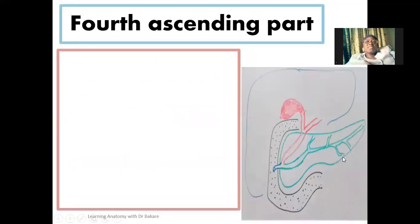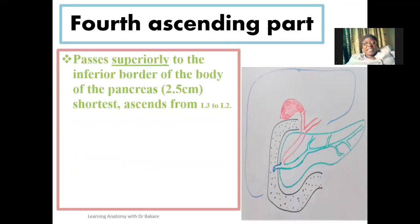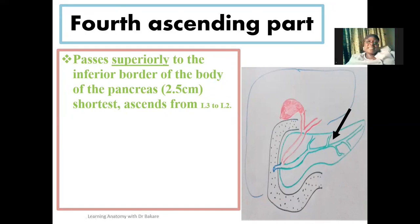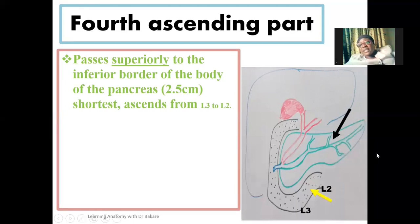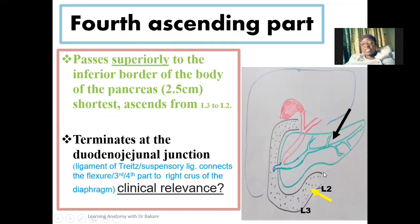The fourth ascending part is the final part of the duodenum. It runs superiorly to the inferior border of the body of the pancreas, ascending from the third lumbar vertebra to the second lumbar vertebra. It is about 2.5 centimeters in length and terminates at the duodenojejunal junction — the junction where the duodenum becomes the jejunum.